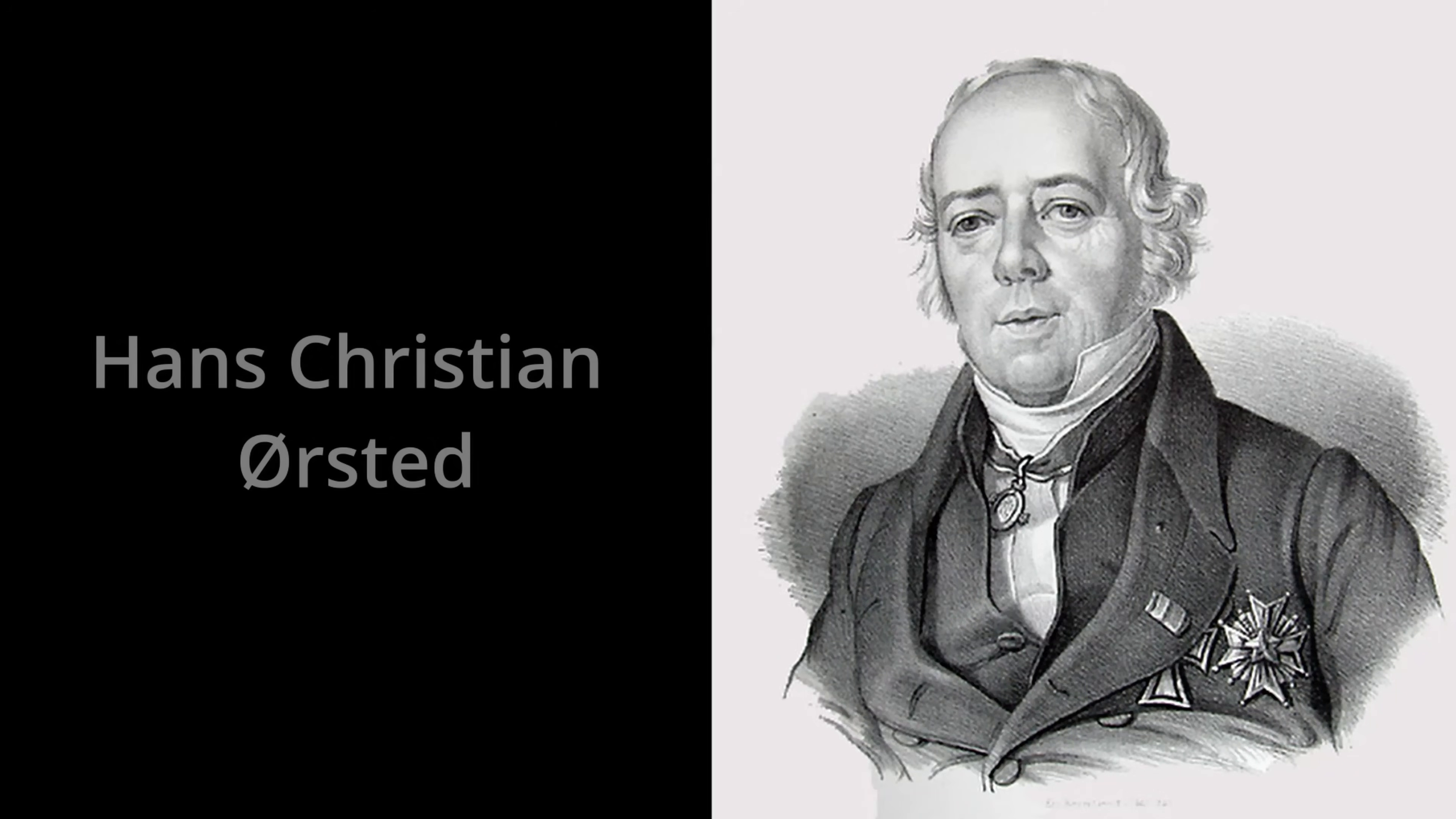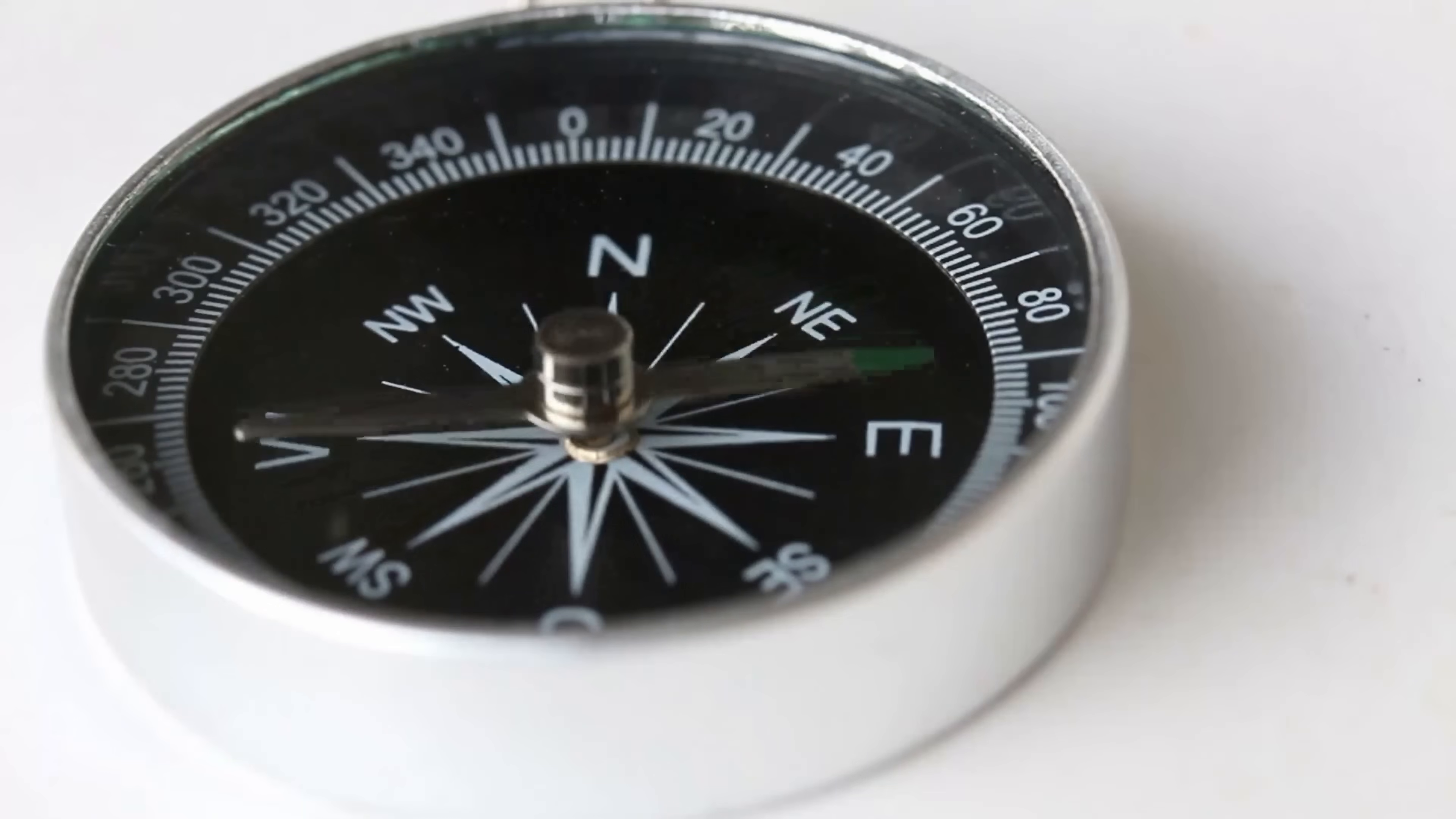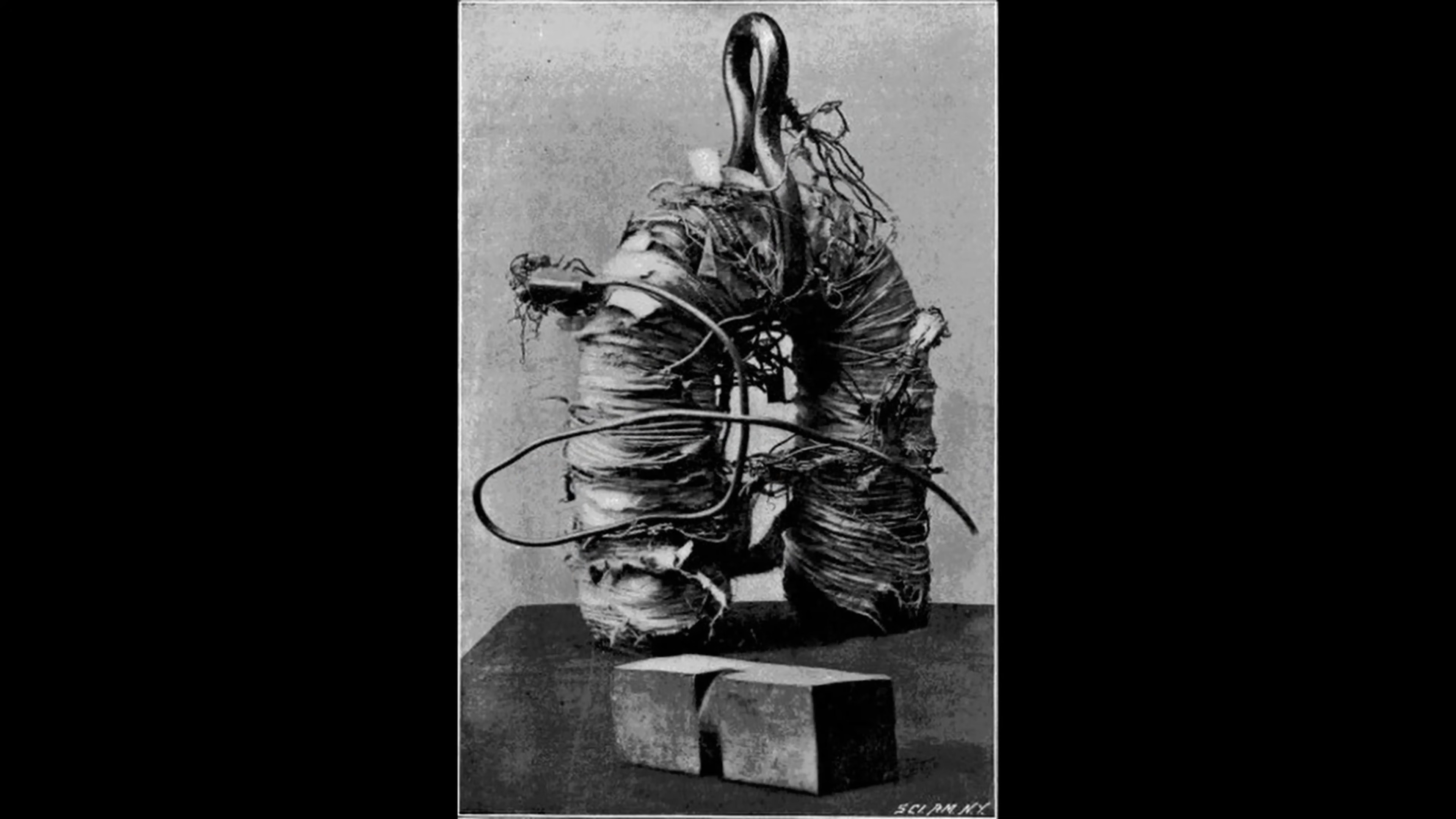Then, in 1820, a happy accident by Danish physicist Hans Christian Ørsted bridged electricity and magnetism. During a lecture, Ørsted noticed a compass needle suddenly twitched whenever an electric current was switched on in a nearby wire. However, electricity influencing a magnet, this was revolutionary. He discovered electromagnetism. Now, it showed that magnetism and electricity are two sides of the same coin, leading to inventions like electromagnets, motors and generators, and all the goodies that power our modern world.